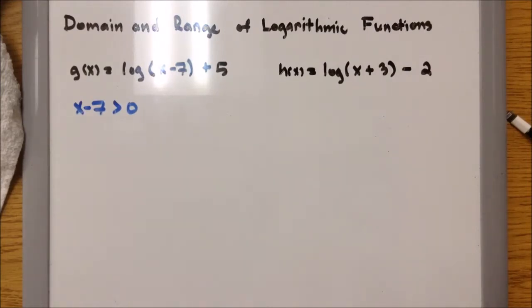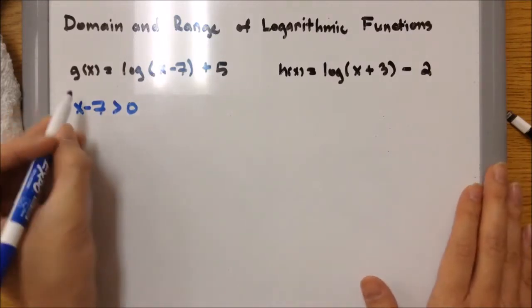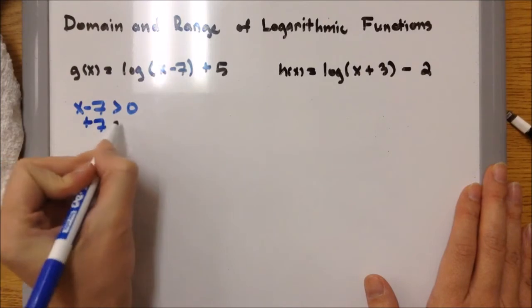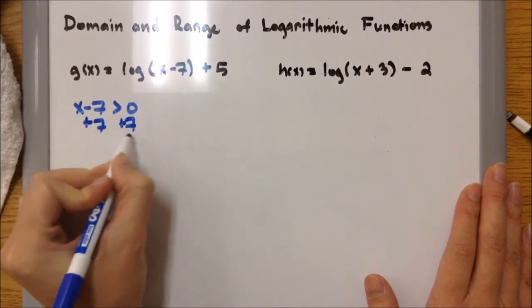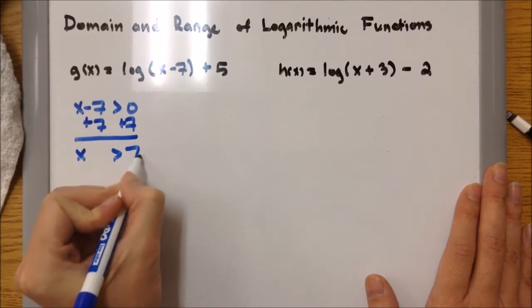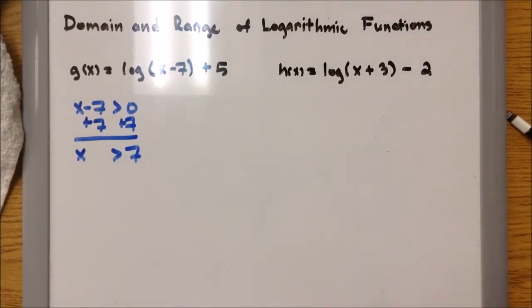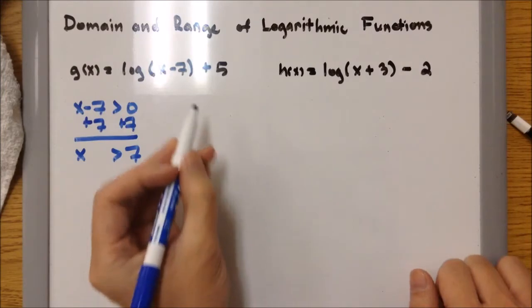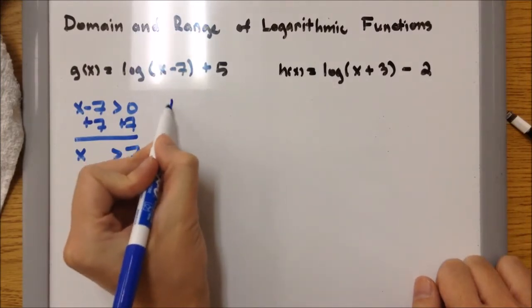If I'm trying to figure out what x can be so that x minus 7 will become a positive number — at least more than 0 — all I've got to do is get x by itself. So now x is greater than positive 7, meaning x can only be any number more than 7. Since this is x, this is for domain.